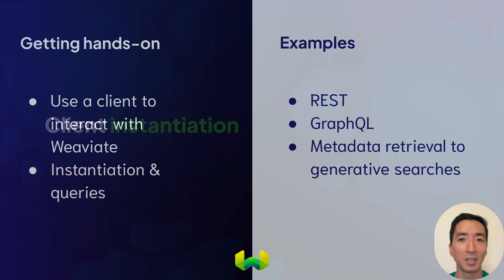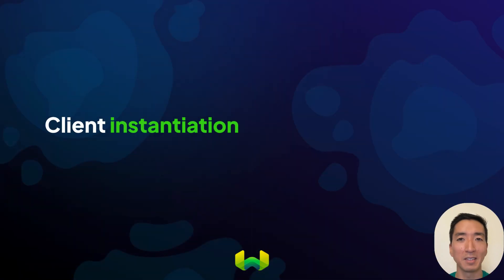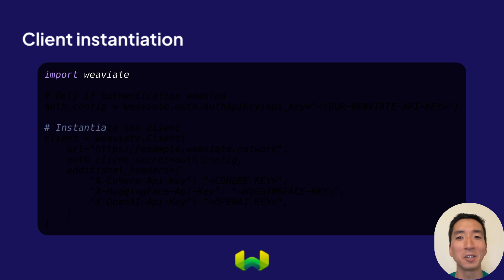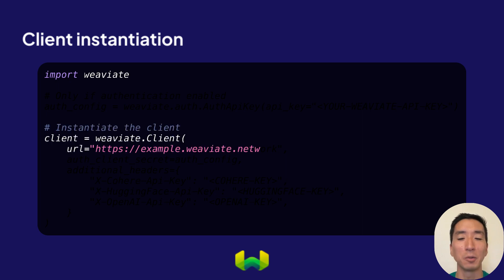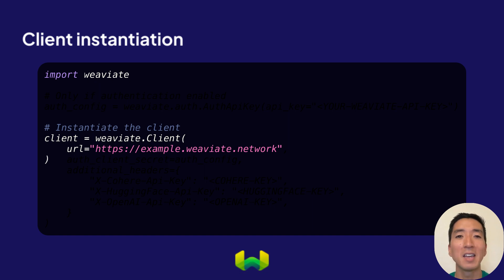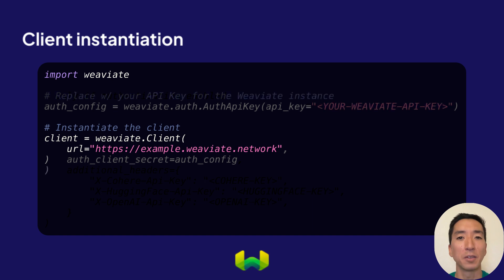First, let's talk about client instantiation. To access your VV8 instance, you'll need to create a client object with the host URL, which is the location of your VV8 instance, like this one shown here. If authentication is enabled, you'll need to provide authentication information like the VV8 API key.